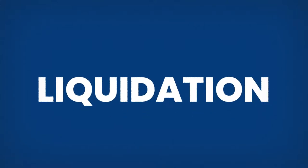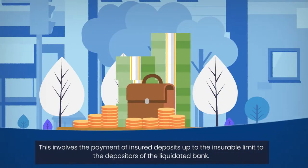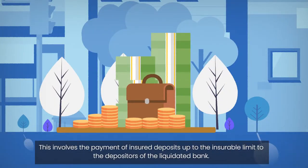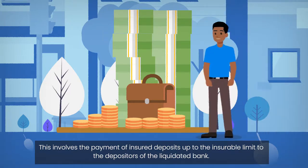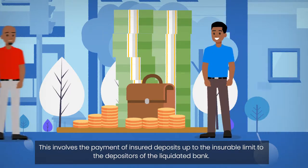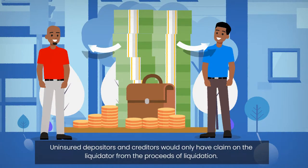Liquidation. This involves the payment of insured deposits up to the insurable limit to the depositors of the liquidated bank. Uninsured depositors and creditors would only have claim on the liquidator from the proceeds of liquidation.